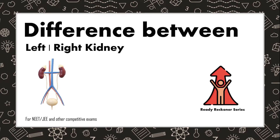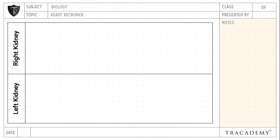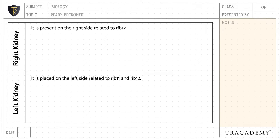The right kidney is present on the right side, related to rib 12, whereas the left kidney is placed on the left side, related to rib 11 and rib 12. The right kidney is positioned slightly lower than the left kidney, while the left kidney is positioned slightly higher.